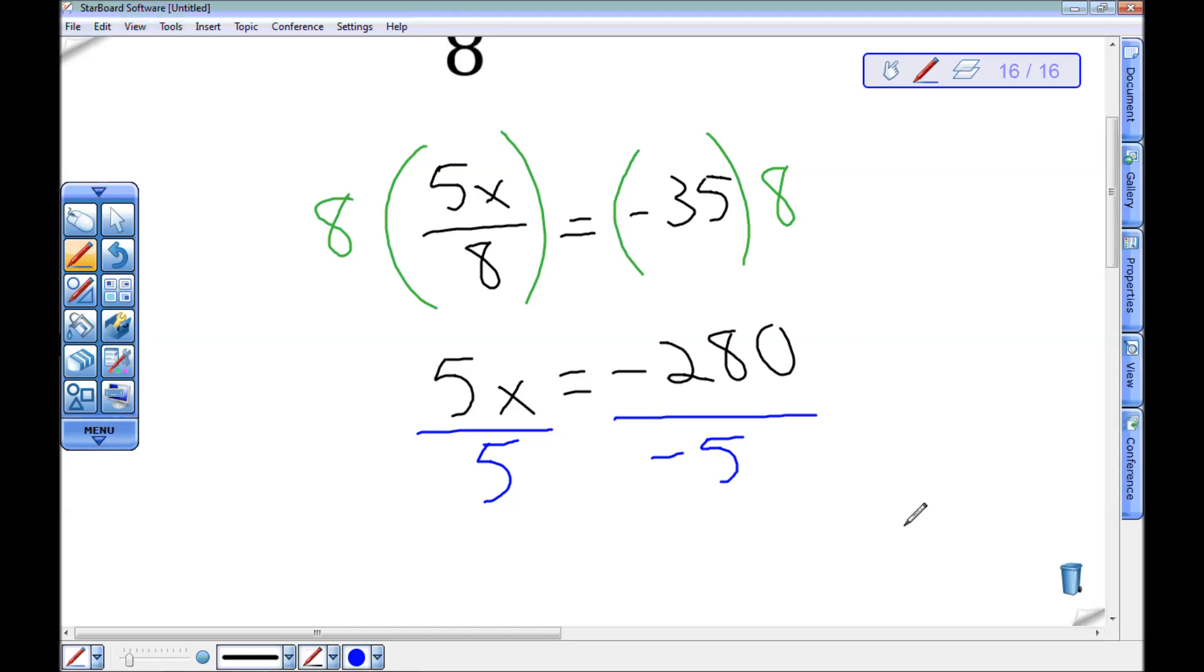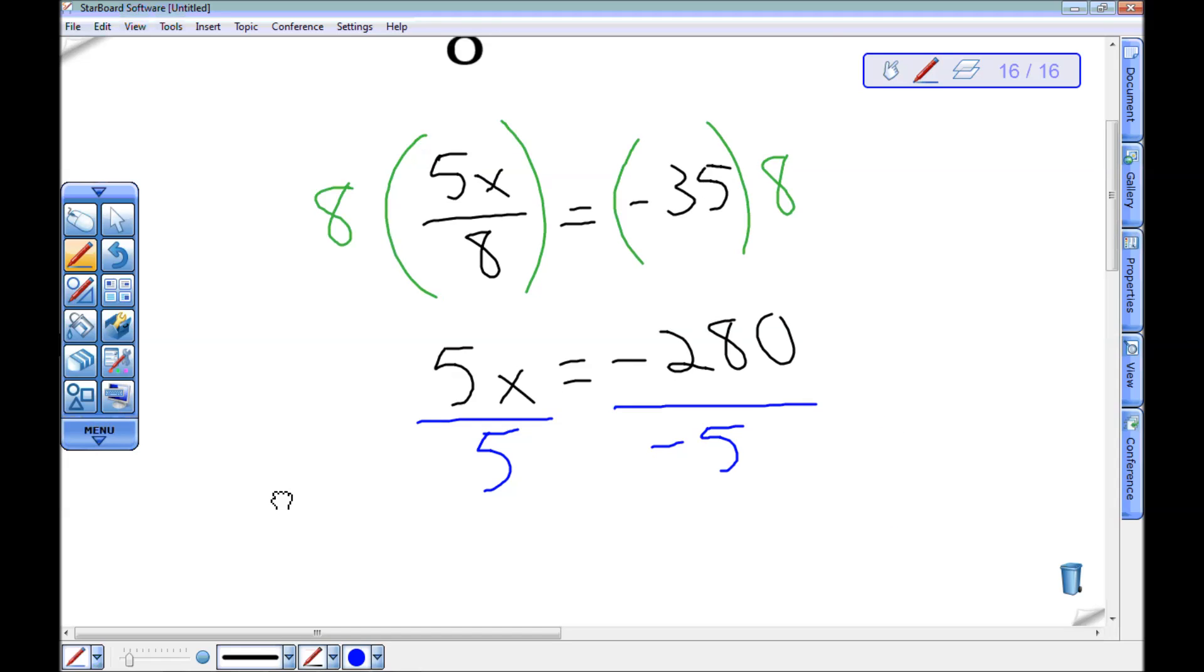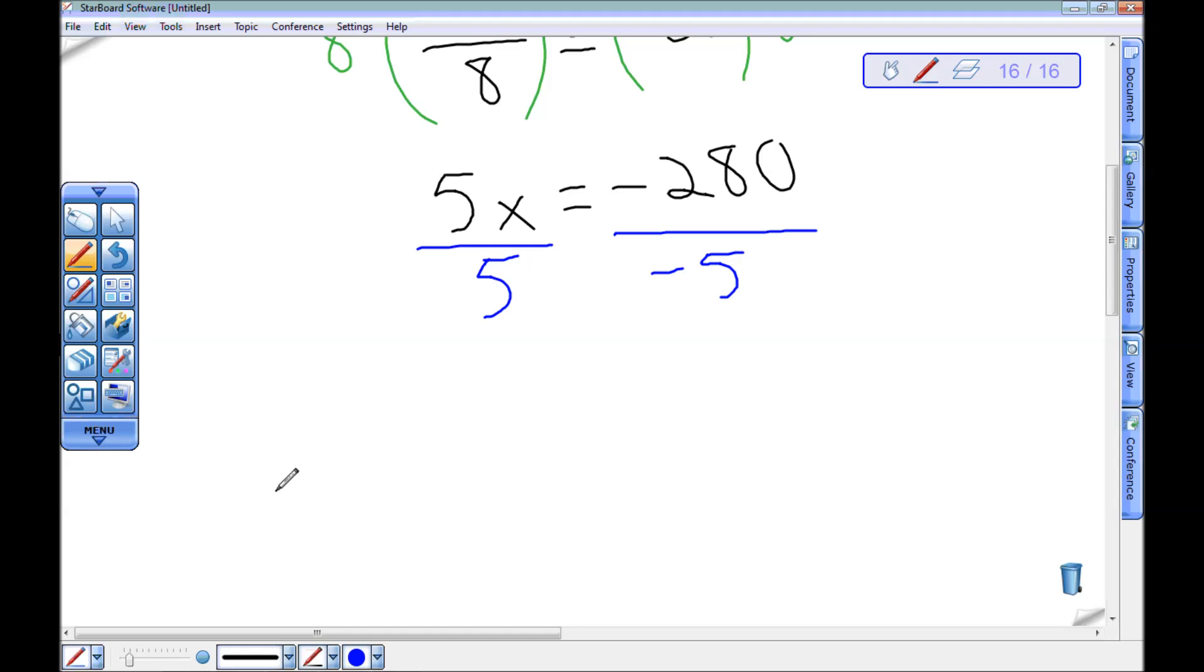But we know where it came from, because we're watching a video, so that should be alright here. 5 times x divided by 5 had better give me x back. And then negative 280 divided by 5 must be 56, positive 56. Let me double check that. So 5 goes into 28 five times, 5 times 5 is 25, that'd leave me 30 left over. 5 goes into 30 six times. A negative divided by a negative is a positive, so I got 56.